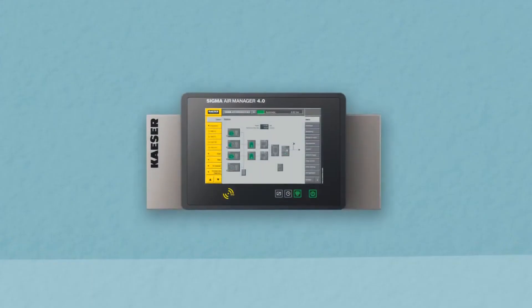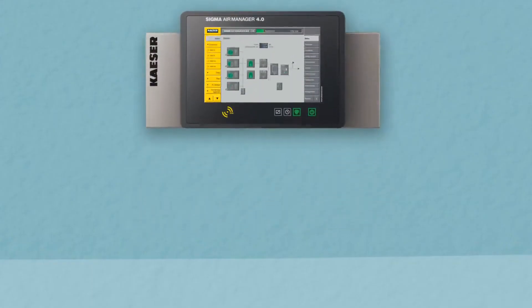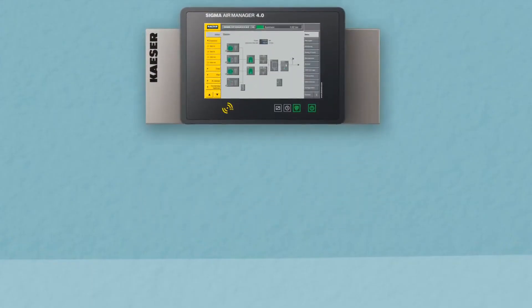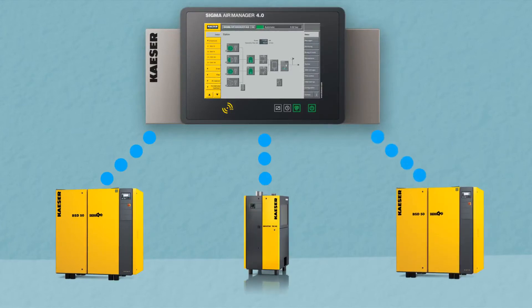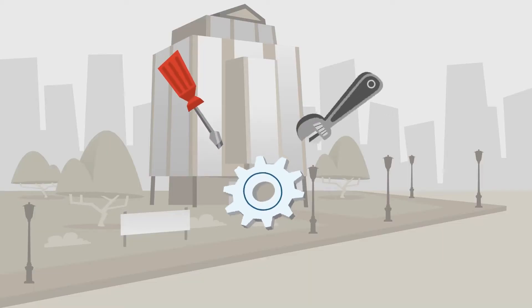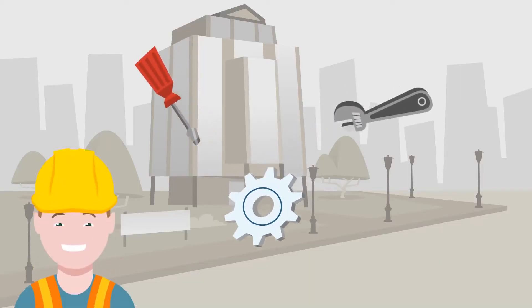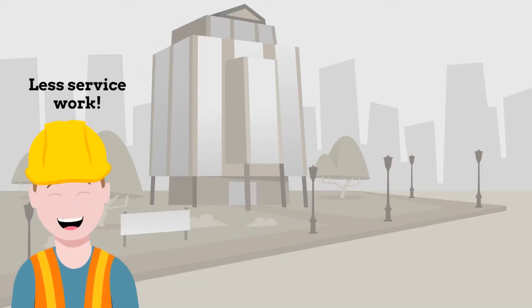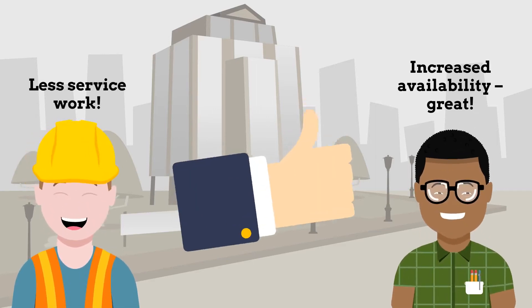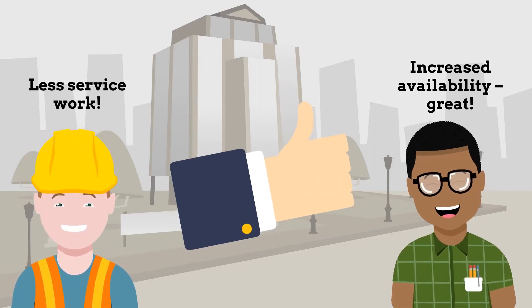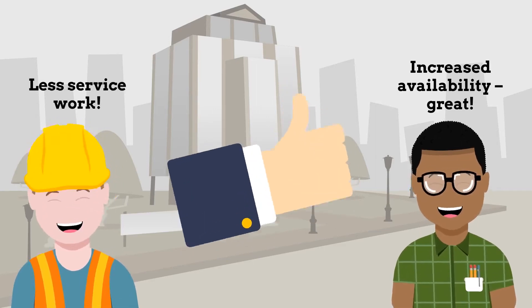The Sigma Air Manager 4.0 is a compressed air management system designed to monitor and control a compressed air system as a whole. It optimizes the efficiency of the entire system and ensures that the operator is provided with a dependable supply of quality compressed air at all times.